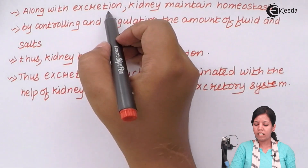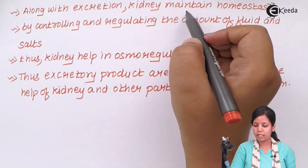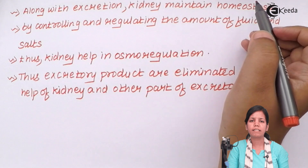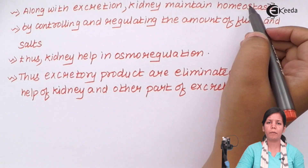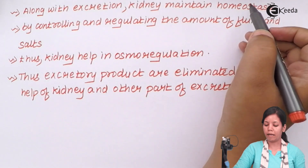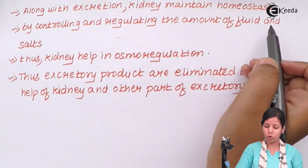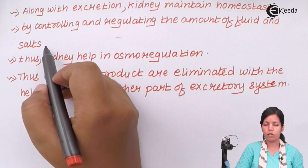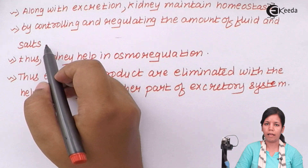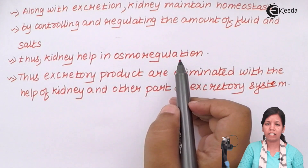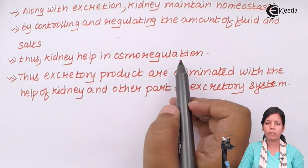Along with excretion, what the kidney does is maintain homeostasis. Homeostasis could be defined as the condition of a totally balanced environment by controlling and regulating the amount of fluid and salts — that is osmoregulation. The kidney helps in the process of osmoregulation, making sure that the amount of fluids in the body are totally regulated.